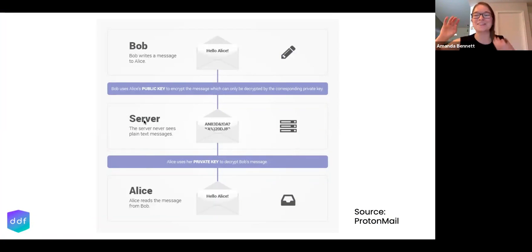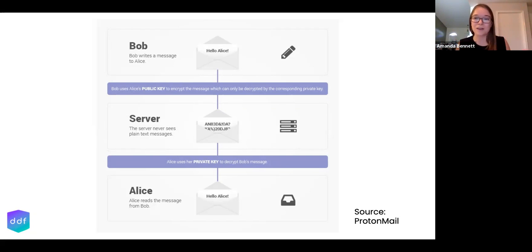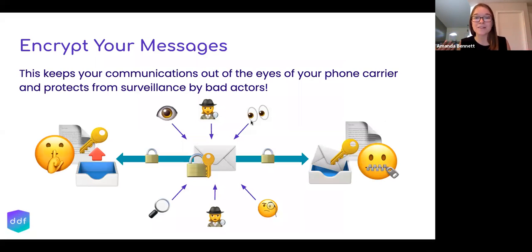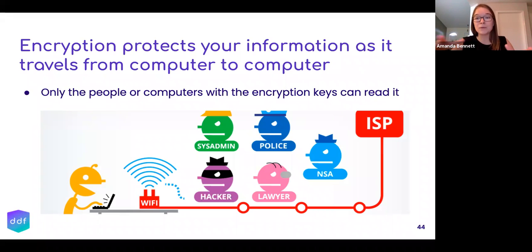Encryption has been a buzzword lately with everything happening with Zoom — but what actually is it? Basically, it's a way of scrambling messages with keys so that only the intended recipient can read the message. In this example, Bob is writing to Alice. He has a key that encrypts the message so that the server — all those computers your message travels through — can't read it because it's scrambled, and only Alice has the key to unlock and read it. This protects you from a lot of those people along the way who might try to read your messages or access your information.